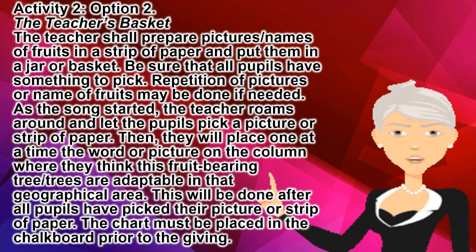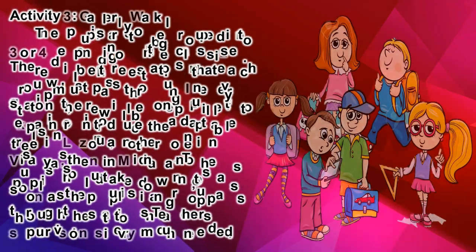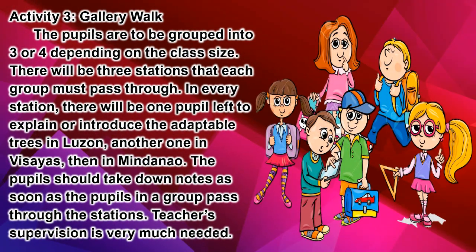The chart must be placed on the chalkboard prior to the activity. Activity 3 — Gallery Walk: Pupils are grouped into three or four depending on class size. There will be three stations that each group must pass through. In every station, one pupil will be left to explain the adaptable trees in Luzon, another in Visayas, and another in Mindanao. Pupils should take down notes as they pass through the stations. Teacher's supervision is very much needed.